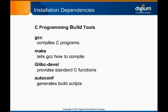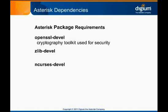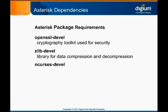Pay attention to YUM's output — it will often tell you the names of those dependencies if it doesn't install them automatically. The next set of dependencies are related to the Asterisk package requirements. Although Asterisk can be built successfully without these packages, they are basic to a typical Asterisk install. These packages include openssl-devel, zlib-devel, and ncurses-devel. OpenSSL-devel is a cryptography toolkit used for security. zlib-devel is a library for data compression and decompression. ncurses-devel is a library for terminal handling and is used when you are building Asterisk using the Menu Select tool, which helps you troubleshoot dependency resolution while compiling Asterisk.